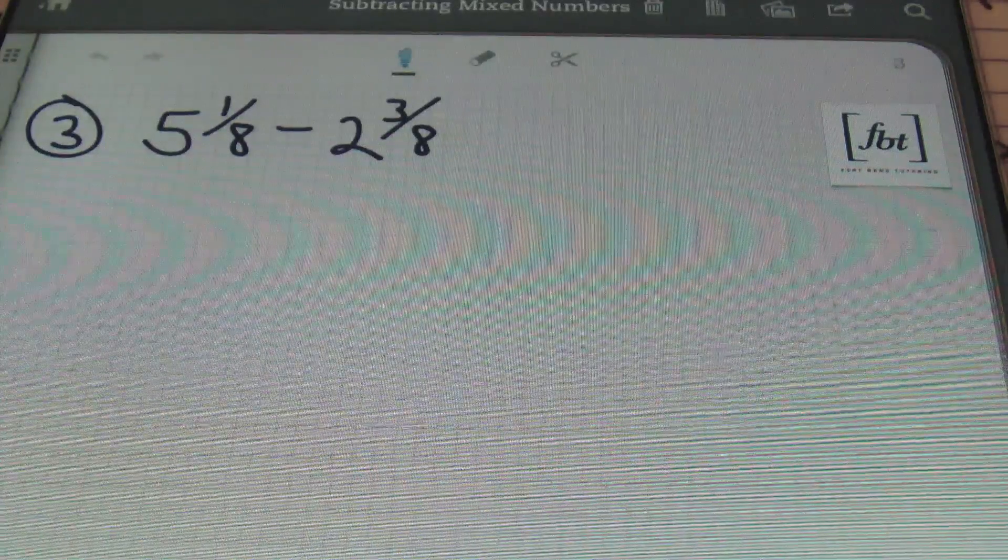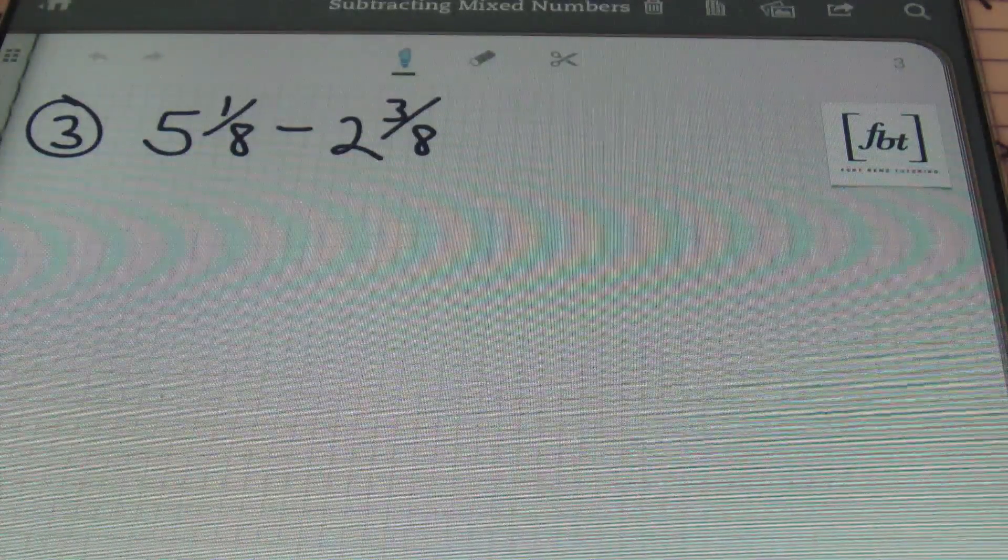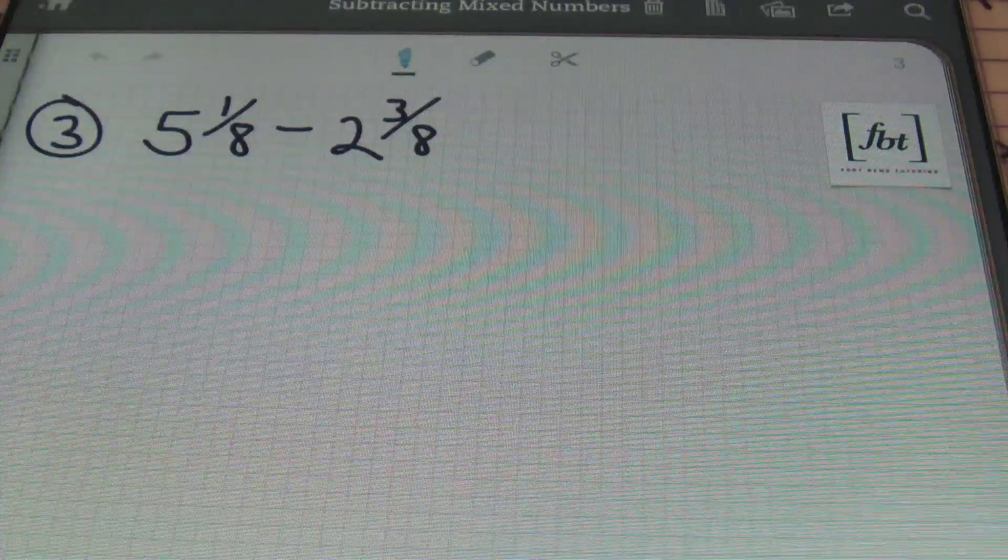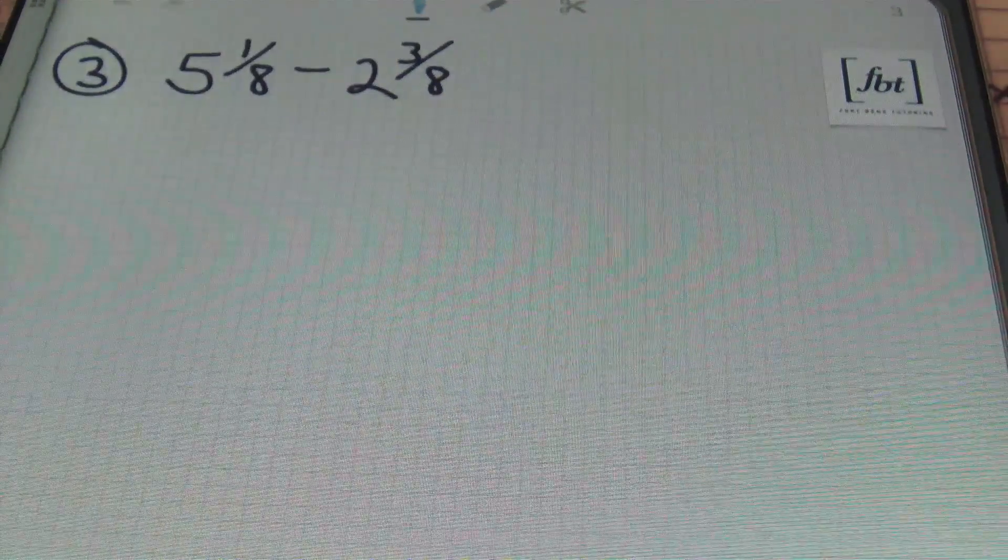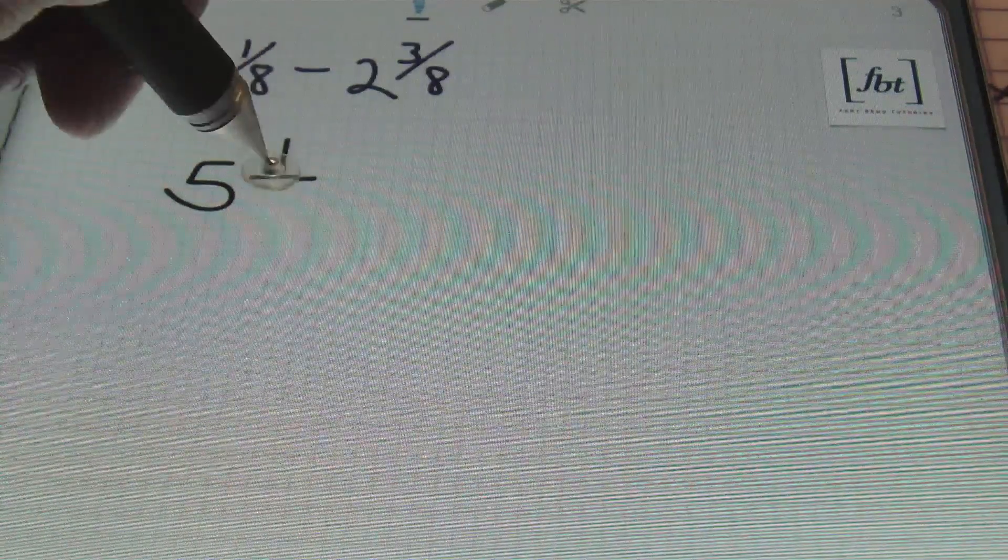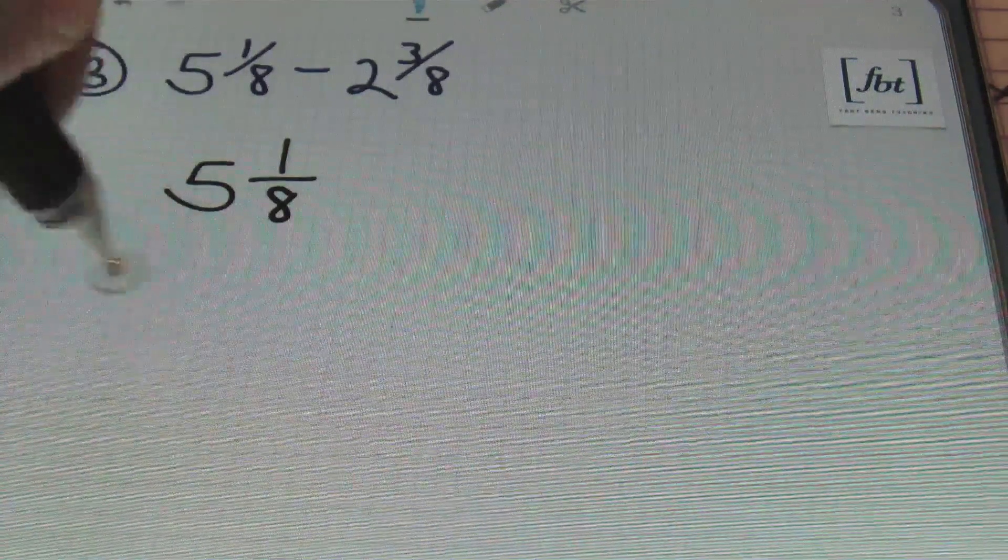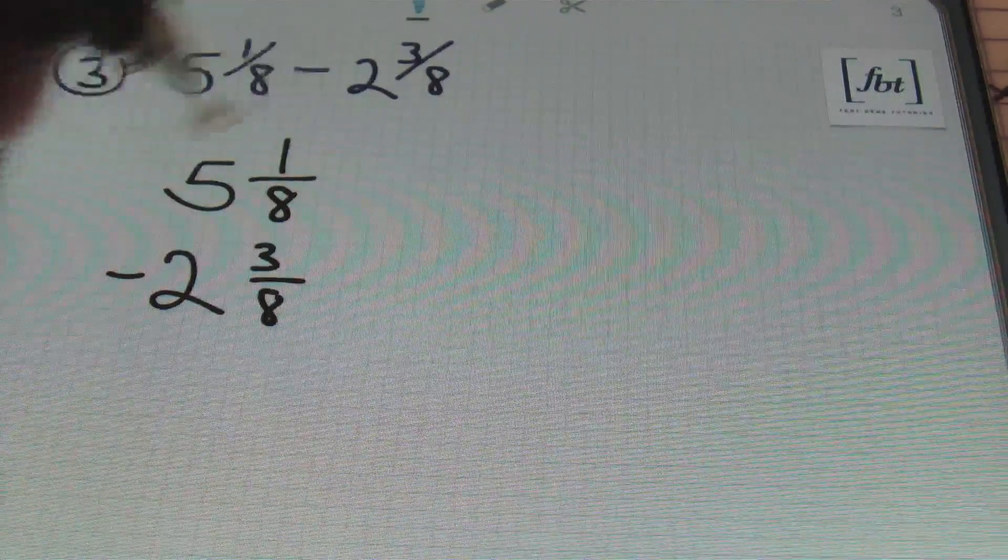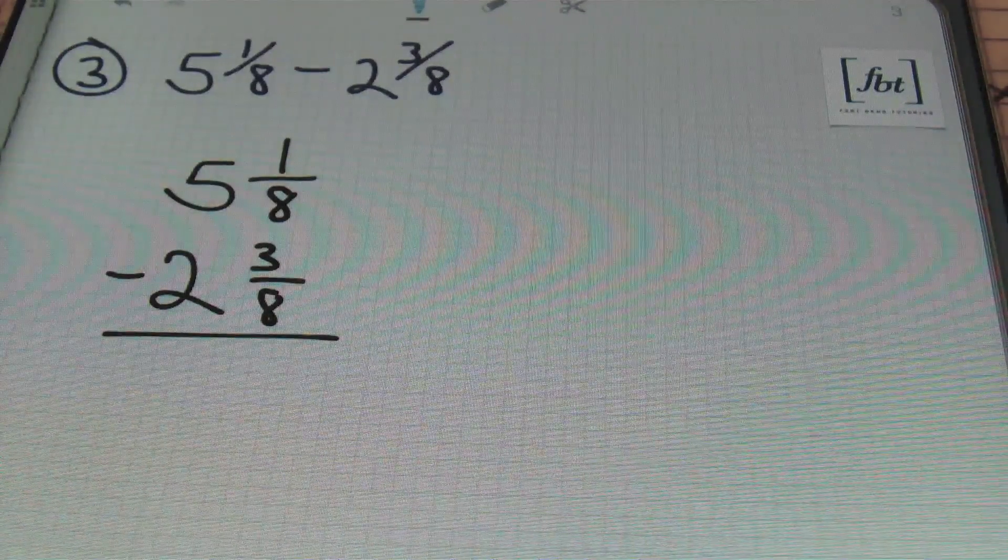Problem number 3. We have 5 and 1 eighth minus 2 and 3 eighths. So in this problem here, I'm going to rewrite it vertically because I can't stand it horizontally, remember? So this is going to be 5 and 1 eighth. Oh, that's an ugly 8. Let's fix that. Oh, that's much better. Minus 2 and 3 eighths. From here, notice that we can't take 3 from 1. So we already have a common denominator, so that's not the issue.